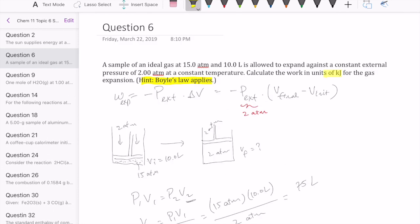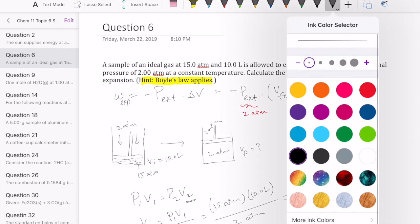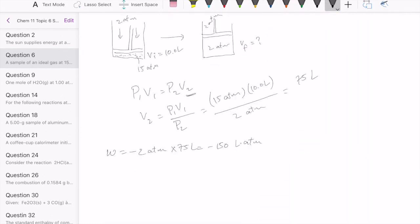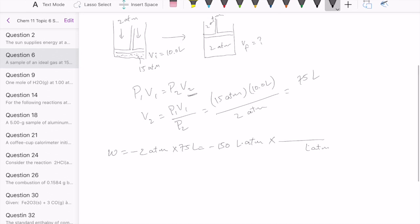So if you want to convert liter-atmospheres to kilojoules, you're going to have to figure out a conversion factor where one is liter-atmospheres and the other is joules. We happen to have this if you remember from the gas chapter.